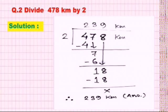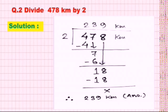Now let us discuss question 2, which is very easy. We have to divide 478 by 2, and here only one unit is involved so we use the second method. 2×2=4, we cannot take 2×3=6 as 6 is more than 4. So 2×2=4, subtract to get 0. Bring down the next number 7. 2×3=6, subtract to get 1. Then 18: 2×9=18. The answer is 239 kilometer.